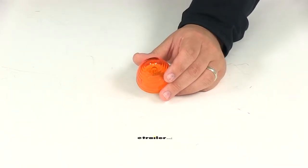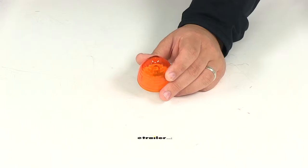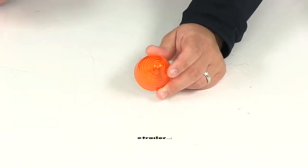Today we're going to be taking a look at part number MC25AB. This is the Optronics Sealed Beehive Amber Trailer Clearance or Side Marker Light.